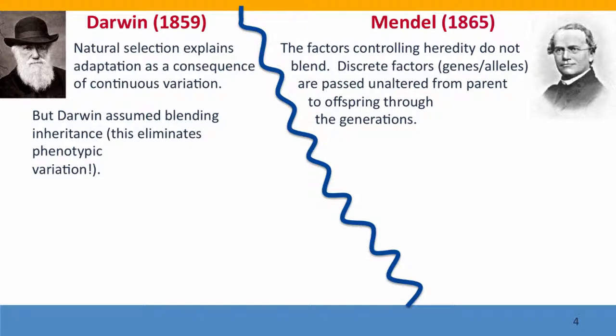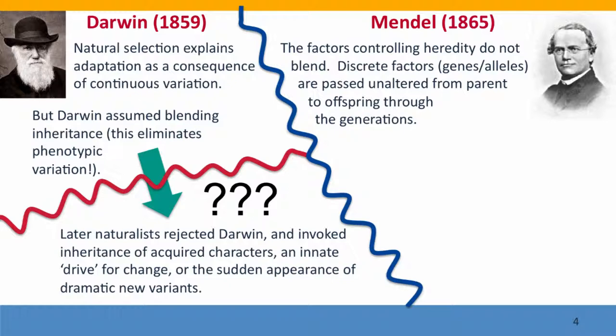However, Mendel's studies had the problem of not being recognized by other scientists. Even though Darwin had a copy of Mendel's paper, he didn't read it. Darwin's ideas were eventually rejected by later naturalists because they couldn't be explained by the current model of blending inheritance. Instead, the later naturalists came up with other ideas: maybe acquired characters are inherited — the kind of thinking popularized by Lamarck — or maybe organisms have some sort of innate drive for change, or maybe new variants appeared suddenly by some mysterious unknown mechanism.